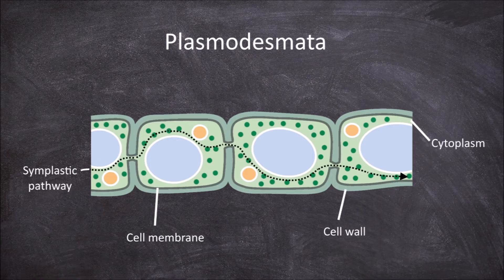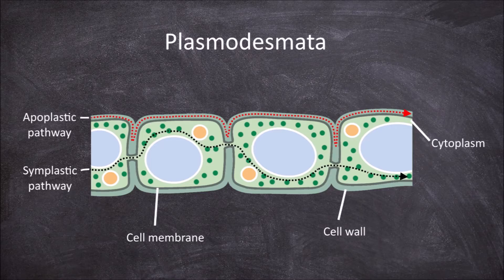The joined cell walls form the apoplast and the apoplastic pathway, which is where materials are able to move between cells through the cell wall.